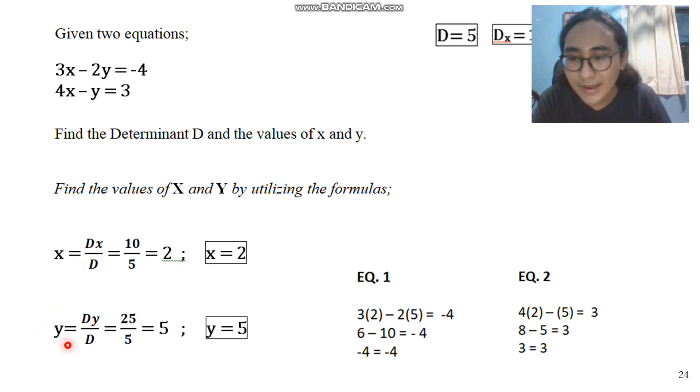Now for y, y is equals to the d sub y over d. Our d sub y is 25. Our d is 5. Therefore, 25 over 5 is equals to 5. Now we have a value for y. This is y is equals to 5.